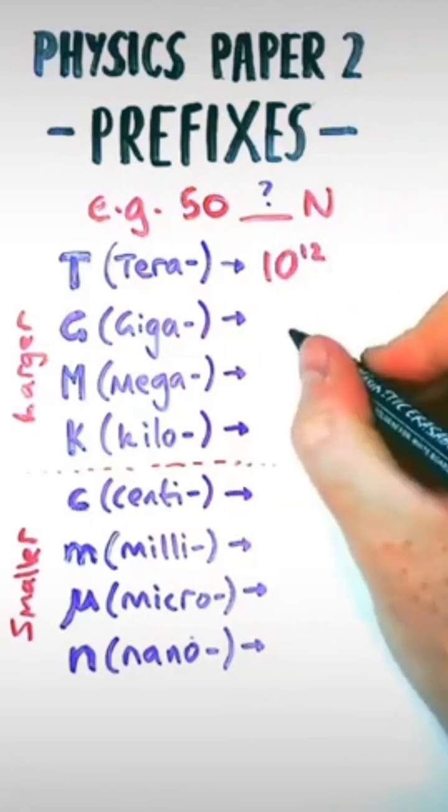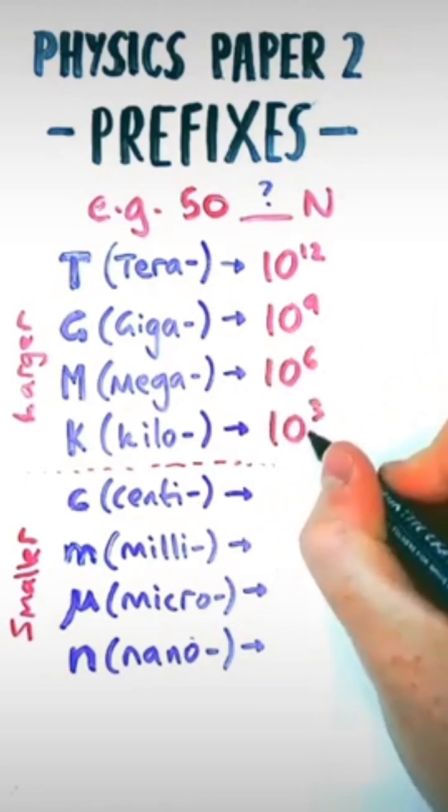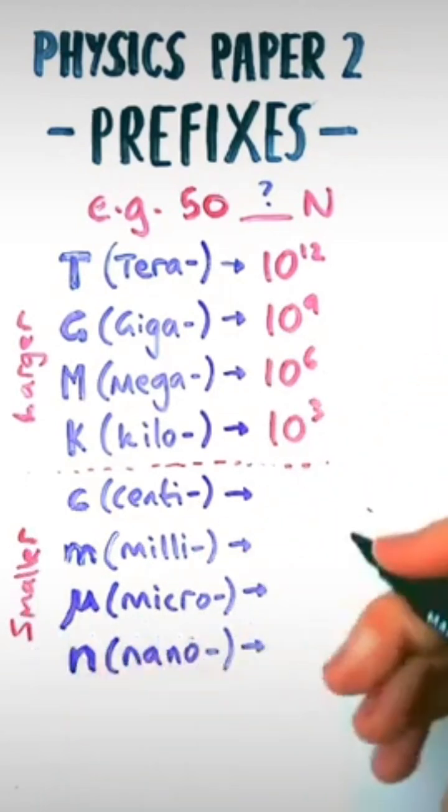That's Tera, that means 10 to the power 12. Giga is 10 to the power 9. Mega is 10 to the power 6, or a million. Kilo is 10 to the power 3. Or to make the number smaller, you can have a negative index, which means centi 10 to the power minus 2.